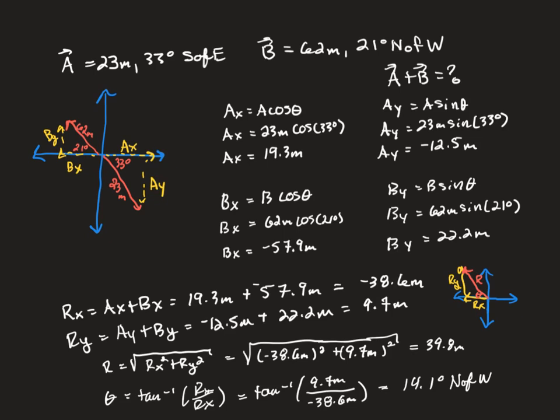Now notice vector A is south of east. So the x-component is positive, but the y-component is negative, because you're pointing to the right and down. So notice I put this minus sign here, that is not going to come out of your calculator.